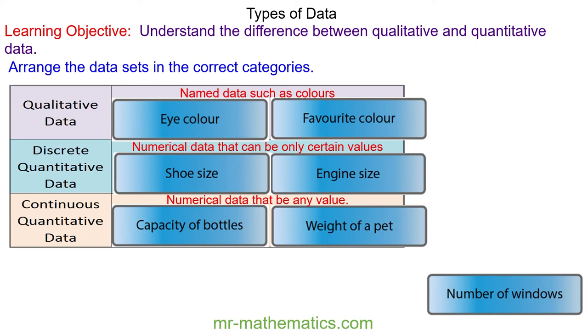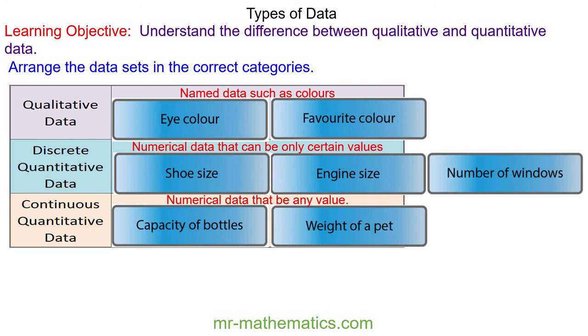And the number of windows is discrete quantitative because for instance you cannot have 0.2 of a window.